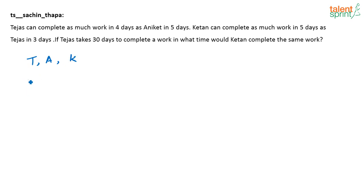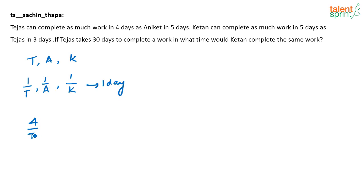In 1 day, Tejas does 1/T of the work, Aniket does 1/A, and Ketan does 1/K. Tejas can complete as much work in 4 days as Aniket in 5 days. So the work completed by Tejas in 4 days is 4/T, and this equals the work completed by Aniket in 5 days, which is 5/A. So 4/T = 5/A — that is what the first statement means.